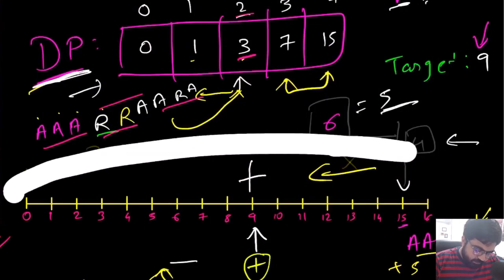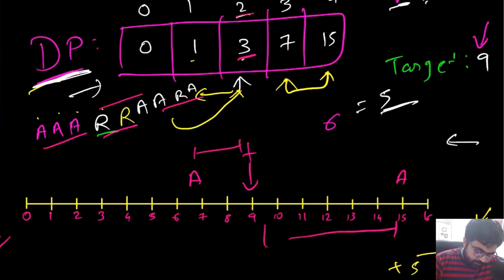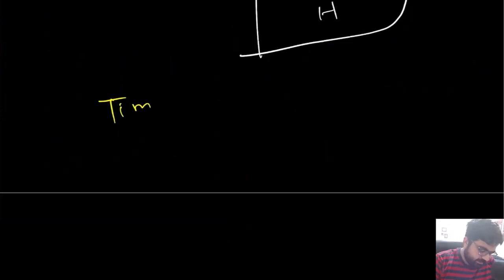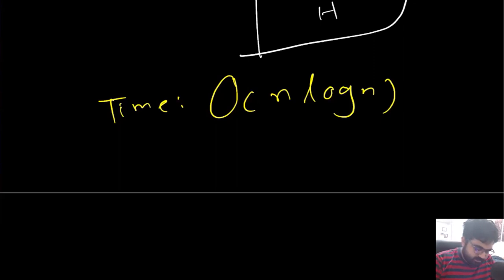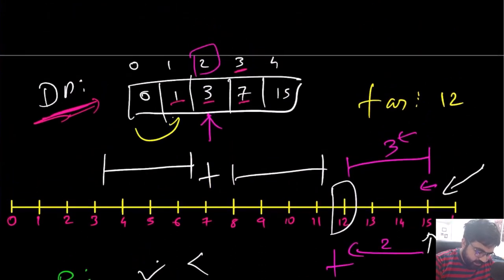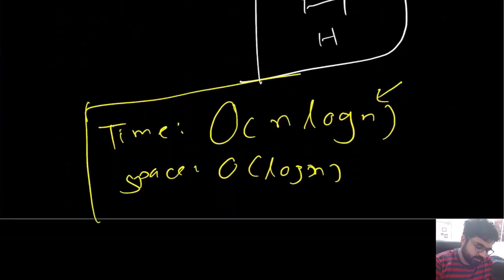To recap: we find the minimum A that gets us just below target and the next A that overshoots, then compare all possibilities. The time complexity is O(n log n) and space complexity is O(log n), because with every jump we're jumping to 2^n, eliminating many values — a very efficient result.